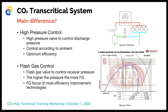The high pressure valve allows you to determine where you are running your discharge pressure. This is critical to system operation — depending on your gas cooler outlet temperature, which is determined by ambient conditions, your controller will determine the optimum pressure for the most efficient operation.